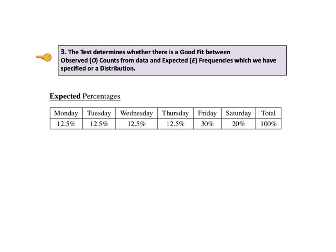Key number three says the test determines whether there is a good fit between observed counts — the O's — from data, and the expected frequencies — the E's — which we have specified, or between observed counts and a distribution. Here's an example of expected frequencies in the form of percentages. We estimate or state or hypothesize numbers that we have reason to expect would be borne out by any future sample data.